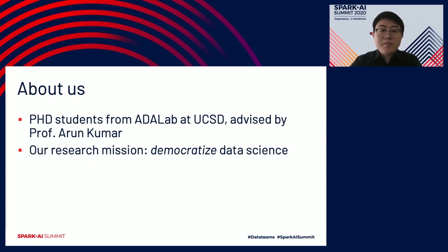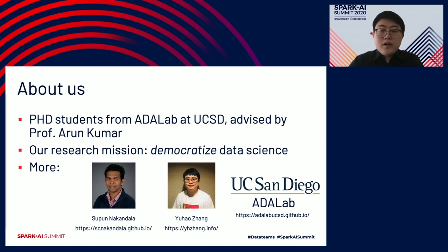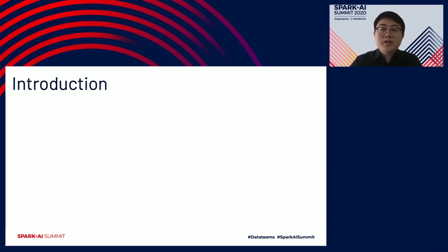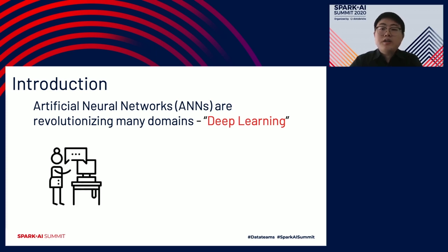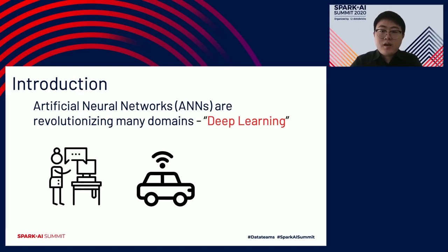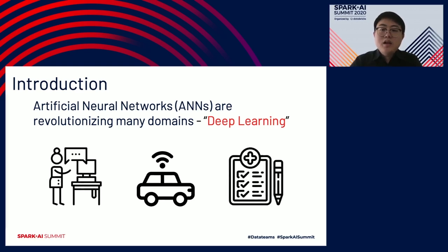You can find more about us on our websites. Artificial neural networks, or better known as deep learning, are revolutionizing many domains, such as machine translation, autonomous driving, or even critical domains like health and medicine. So probably you're already considering using deep learning in your next project.